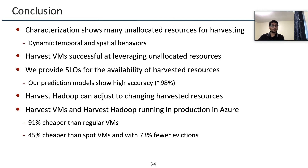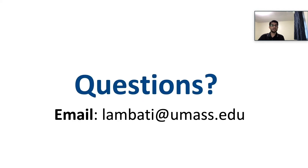To conclude, we presented the characterization of unallocated resources in Azure and introduced a new VM class called Harvest VMs that can dynamically harvest unallocated resources on the host. We provided SLOs for Harvest VMs, and our prediction models achieve around 98% accuracy for predicting survival rates. We also presented Harvest Hadoop, which can leverage Harvest VMs to run Hadoop jobs. Harvest VMs are significantly cheaper than regular VMs and also 45% cheaper than spot VMs while having 73% fewer evictions. With this, I conclude and will take any questions.